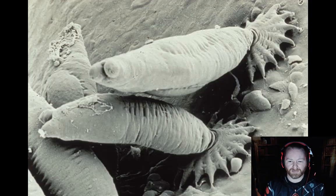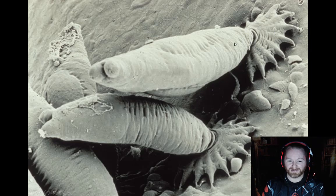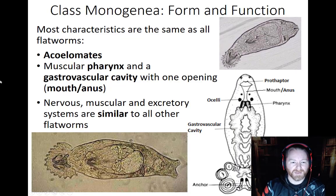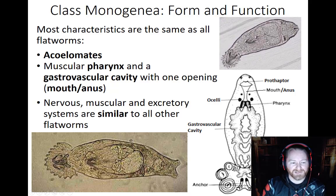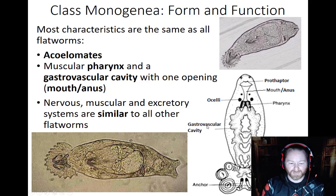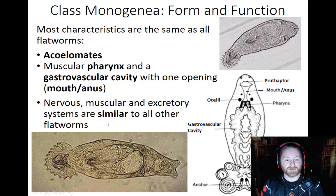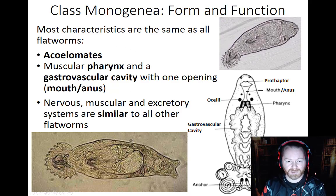Here's a close-up picture of them. This is the anterior or head end, and this is the posterior or foot end. You can see they're small and have a lot going on at the back to help them hang on. These are acoelomates. They do have a pharynx, gastrovascular cavity, and a mouth slash anus just like other flatworms. Their nervous and muscle systems are similar to other flatworms, but they have a few unique features as well.